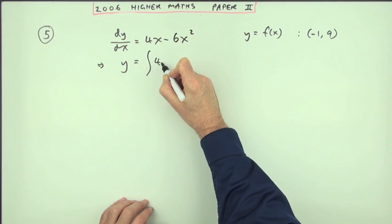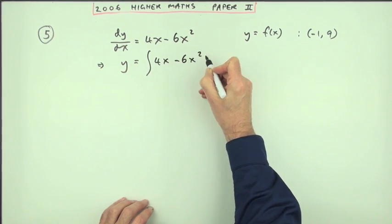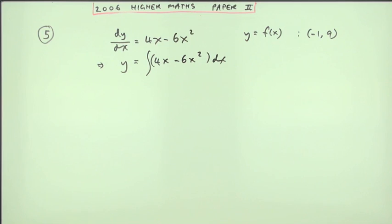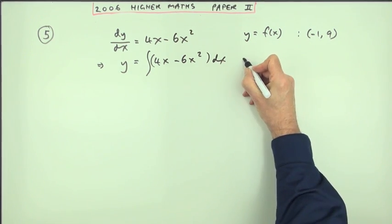I'll just integrate the 4x minus 6x squared to see where I would have started in the first place to do the differentiation. That's the first mark.